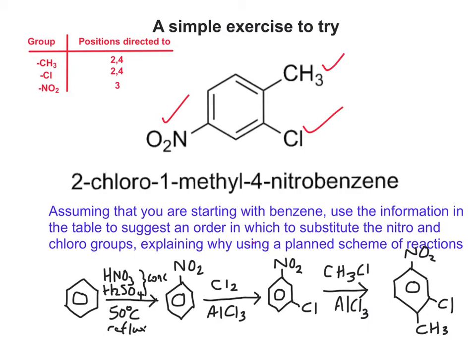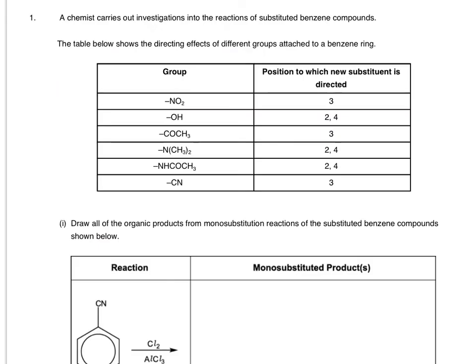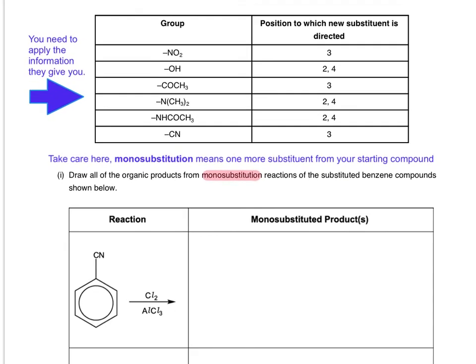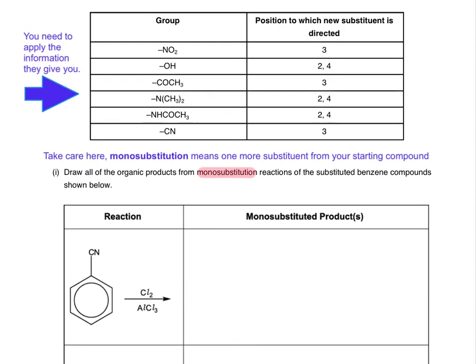Let's try an exam question. In an exam they give you the positions to which the new substituent is directed, so you need to apply the information given. The question asks to draw all organic products from monosubstitution reactions - monosubstitution means one more substituent from your starting compound. With CN as the starting substituent, that means the new substituent goes to position 3. Looking at the reagents and conditions, that's going to chlorinate it, so you draw the 3-chloro product.